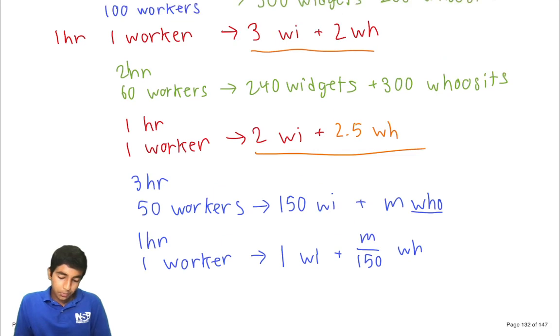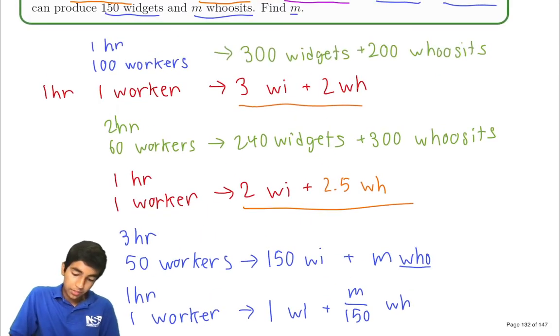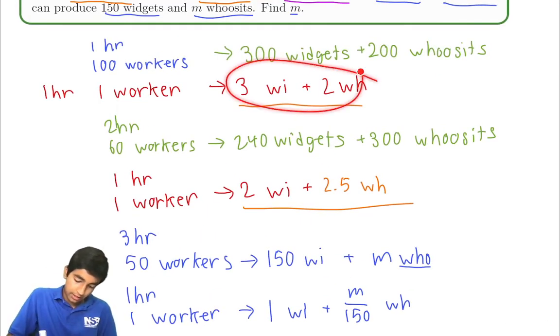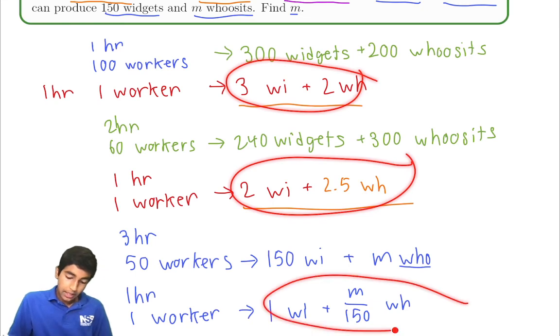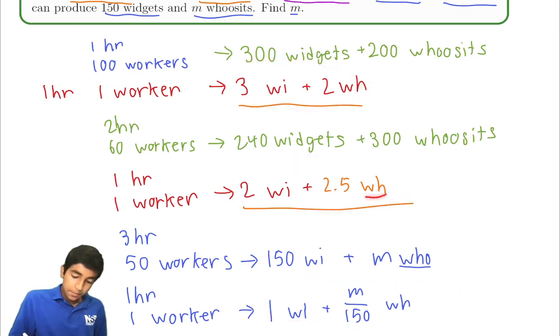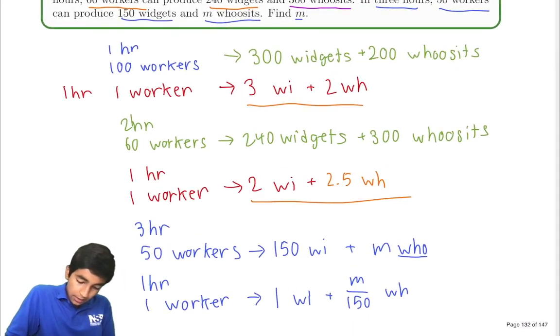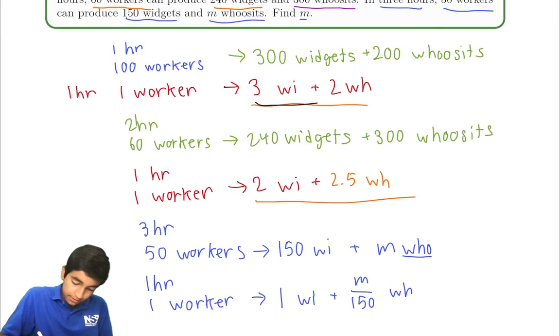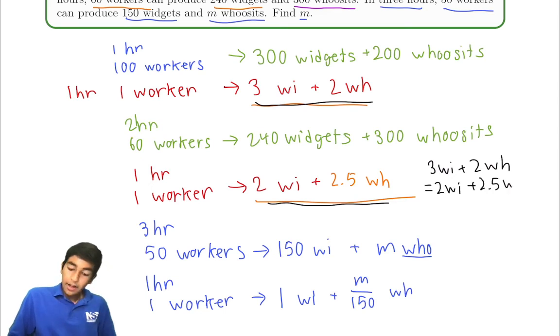We know these are all gonna be equal. This is going to equal this is going to equal this. And the key thing to note here is, let's take a look. We know that, let's say we have the first two quantities equal. So let's write that. 3 widgets plus 2 whoosits is 2 widgets plus 2.5 whoosits. You can subtract 2 widgets and 2 whoosits from both sides to get 1 widget is half a whoosit.